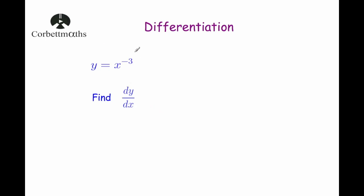Our next question is a little different because we've got a negative power, but it's the same technique. We're going to bring the power down and reduce the power by 1. So dy by dx — we bring the power down, giving negative 3x, and then take 1 away from the power. Be careful here: minus 3 take away 1 would be minus 4. Some students mistakenly write negative 2, thinking that taking away from minus 3 gives minus 2 — but that's wrong. Minus 3 take away 1 is minus 4. So if y equals x to the power of minus 3, dy by dx equals minus 3x to the power of minus 4.